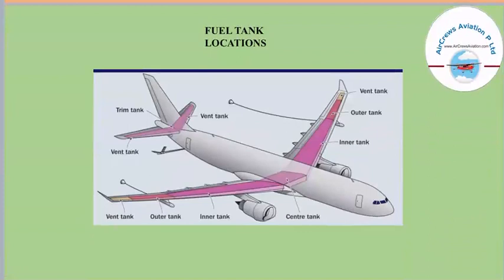There are various fuel tank locations in an aircraft. The area highlighted in pink shows the location of the fuel tank. Generally, fuel is stored largely in the wing area of an aircraft, with some storage also at the tail section. The tanks include the vent tank, outer tank, inner tank, and central tank, generally located in the wing area. The tail section also has a vent tank and a trim tank.